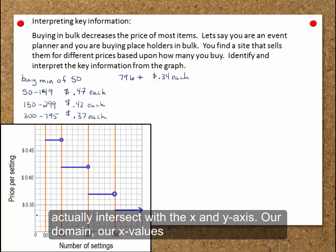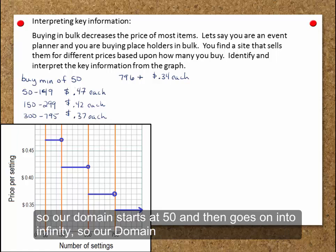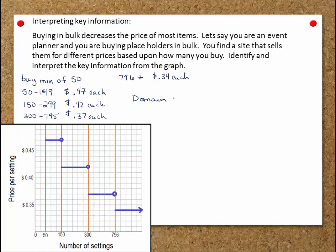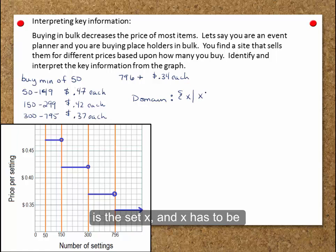Our domain are x values. So our domain starts at 50 and then goes on into infinity. So our domain is the set x, and x has to be greater than or equal to 50.